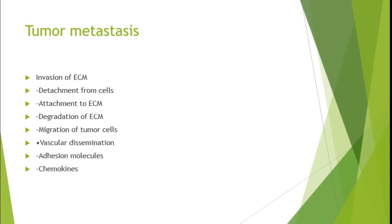Tumor metastasis begins with invasion of the epithelial cell membrane: detachment from surrounding cells, attachment to the membrane, degradation of the membrane, then migration of tumor cells. Vascular dissemination follows — either lymphatic or blood — regulated by adhesion molecules and chemokines.